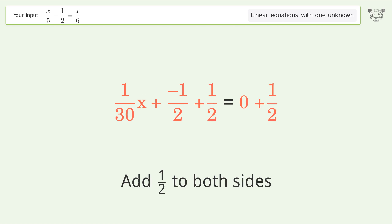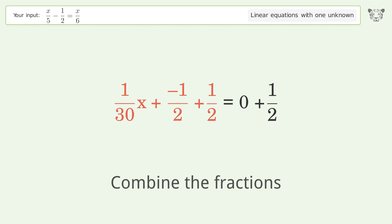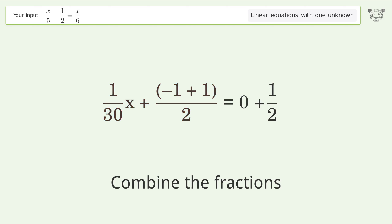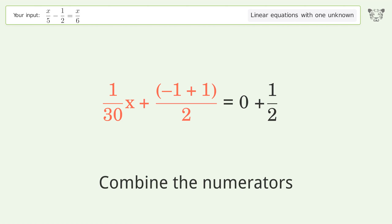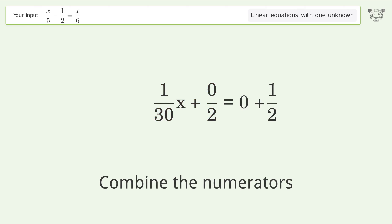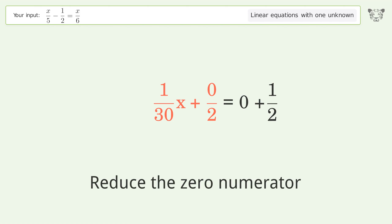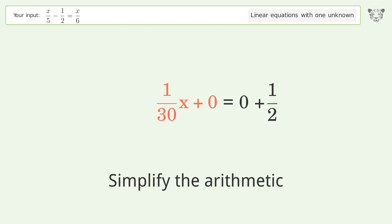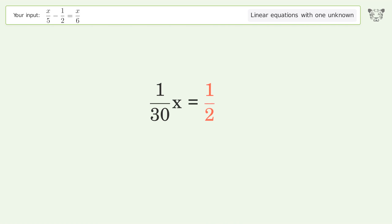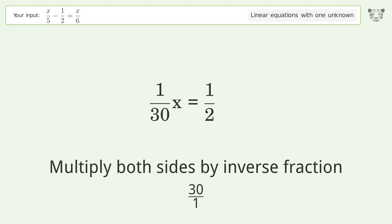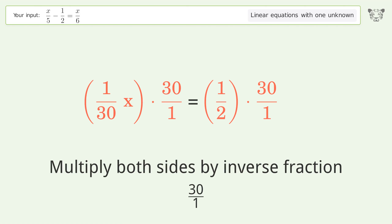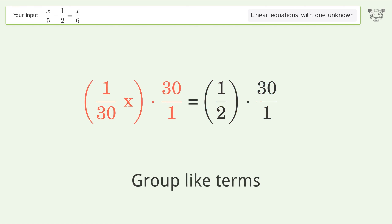Group all constants on the right side of the equation. Add 1 over 2 to both sides. Combine the fractions. Combine the numerators. Isolate the x — multiply both sides by the inverse fraction 30 over 1.